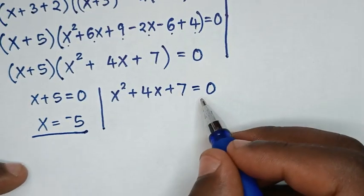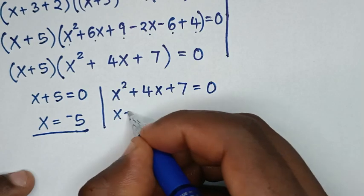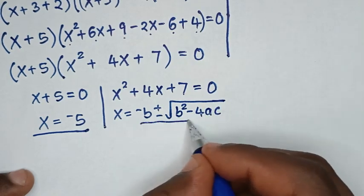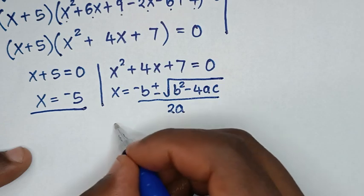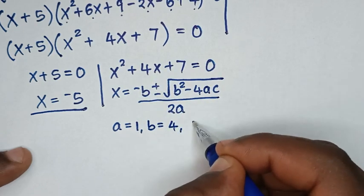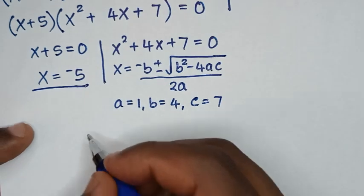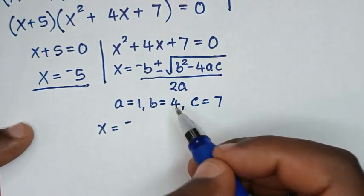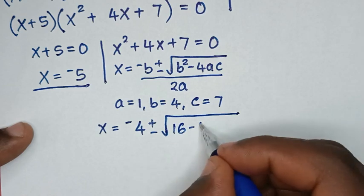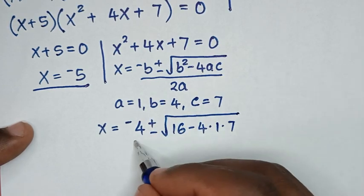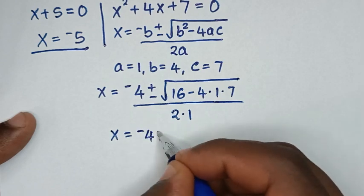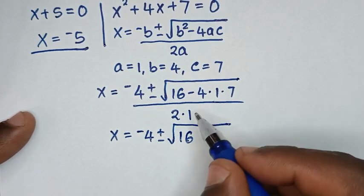To solve the quadratic equation x^2 + 4x + 7 = 0, we'll use the quadratic formula: x = (-b ± √(b² - 4ac)) / 2a. Here a = 1 (coefficient of x²), b = 4 (coefficient of x), and c = 7 (constant). So it will be x = -4 ± √(4² - 4·1·7) all over 2·1.